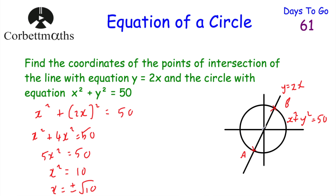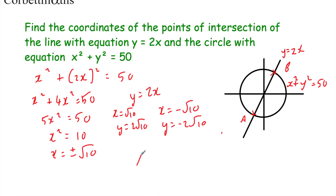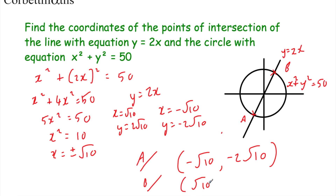Our two values for x are negative root 10 and root 10. Since y equals 2x: if x equals root 10, then y equals 2 root 10; and if x equals negative root 10, then y equals negative 2 root 10. So the two coordinates are A = (−√10, −2√10) and B = (√10, 2√10). Well done if you got those.